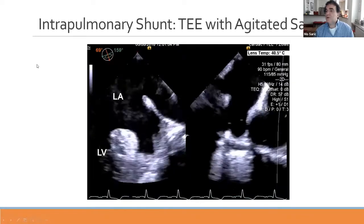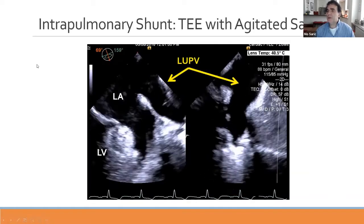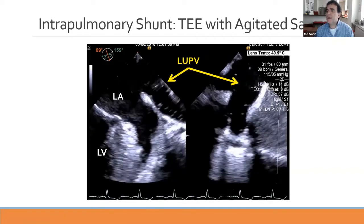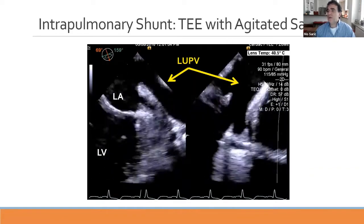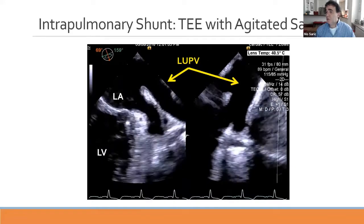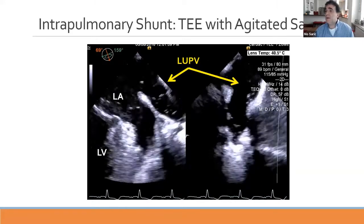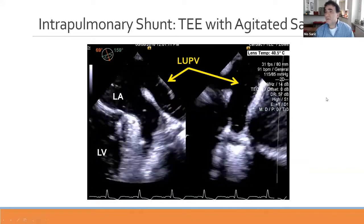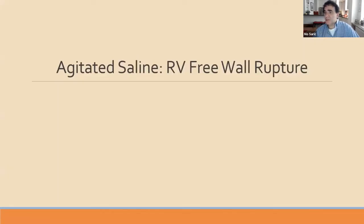This can also be seen on TEE, where there is delayed bubble appearance arriving through, in this case, the left upper pulmonary vein. The shunting can be unilateral—limited to the left-sided pulmonary veins—or bilateral involving both right and left pulmonary veins. This summarizes the differentiation of patent foramen ovale from intrapulmonary shunt using agitated saline injection.